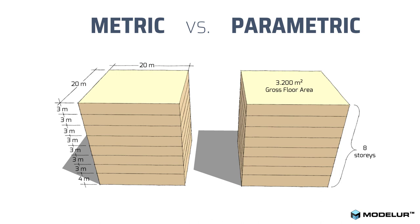The easiest way to explain parametric design compared to traditional design is with this image. With the traditional metric approach, we input the dimensions of buildings to get a volume. With the parametric approach, we use direct end values — like gross floor area and number of stories — and the computer calculates what dimensions fit those requirements. Both buildings look the same, but one is defined as 20 by 20 meters with story heights, while the other is defined by target GFA and story count.